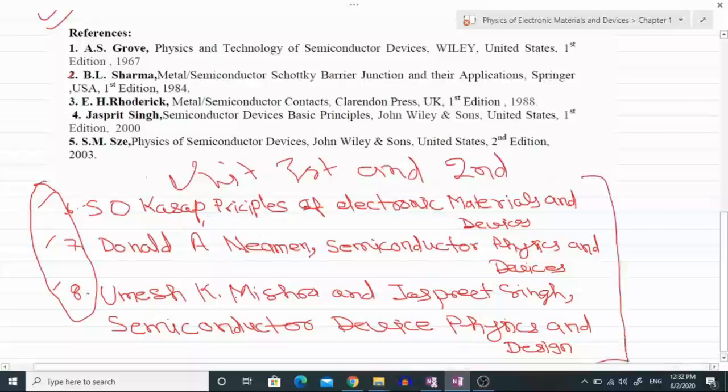That is the book written by S.O. Kasap with title Principles of Electronic Materials and Devices. Second one is written by Donald A. Neiman with title Semiconductor Physics and Devices. Third one is written by Umesh K. Mishra and Jasprit Singh with title Semiconductor Device Physics and Design are very helpful for unit 1st and 2nd.